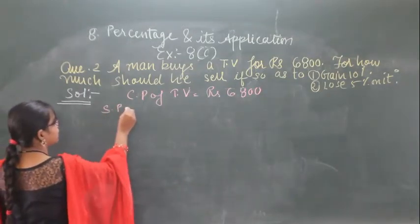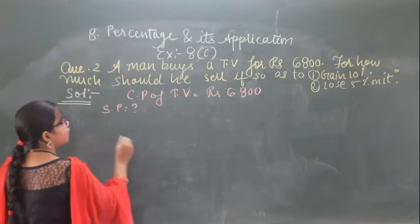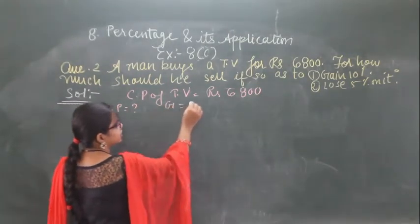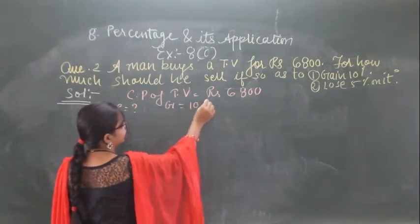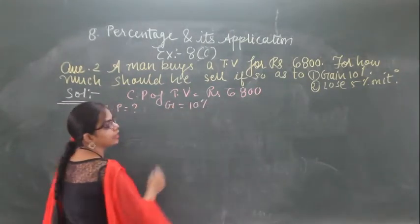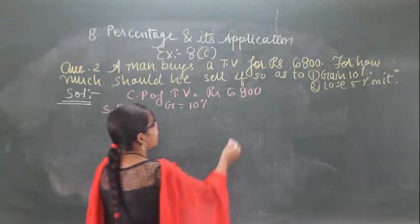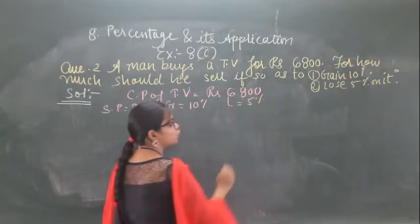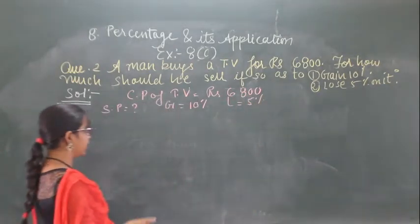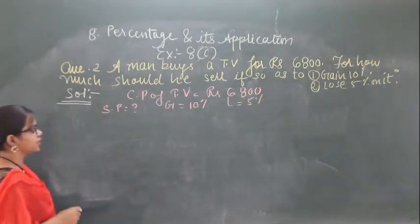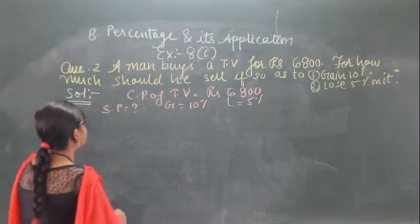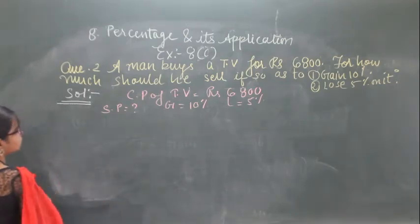You have to find out the selling price when you will get a gain of 10% and a loss of 5% only. These two conditions are given and cost price is given. You have to find out the selling price.